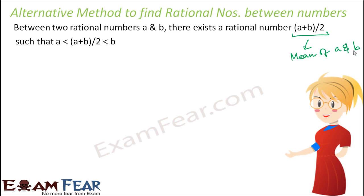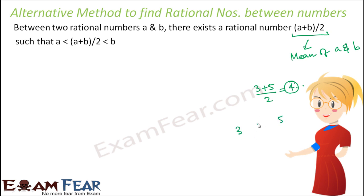For example, if you have two numbers 3 and 5, the average of 3 and 5 is (3 plus 5) divided by 2, which is 4. So 4 is the number that lies exactly midway between 3 and 5. That's what we mean by mean.